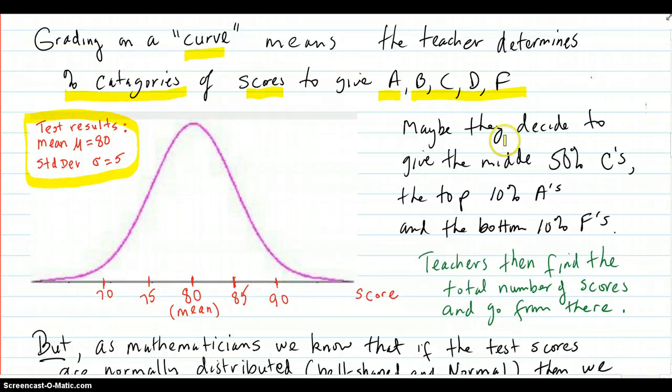Okay, so on this test, maybe the teacher decides to give the middle 50% C's, the top 10% A's and the bottom 10% F's, and the B's and D's will be forced at that point.